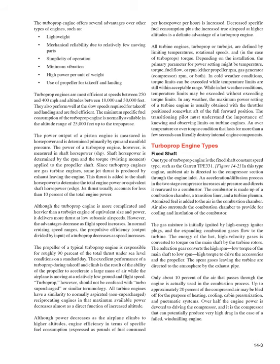In cold weather conditions, torque limits can be exceeded while temperature limits are still within acceptable range. In hot weather conditions, temperature limits may be exceeded without exceeding torque limits. In any weather, the maximum power setting of a turbine engine is usually obtained with the throttle positioned somewhat short of the full forward position. The transitioning pilot must understand the importance of knowing and observing limits on turbine engines. An over-temperature or over-torque condition lasting more than a few seconds can literally destroy internal engine components.